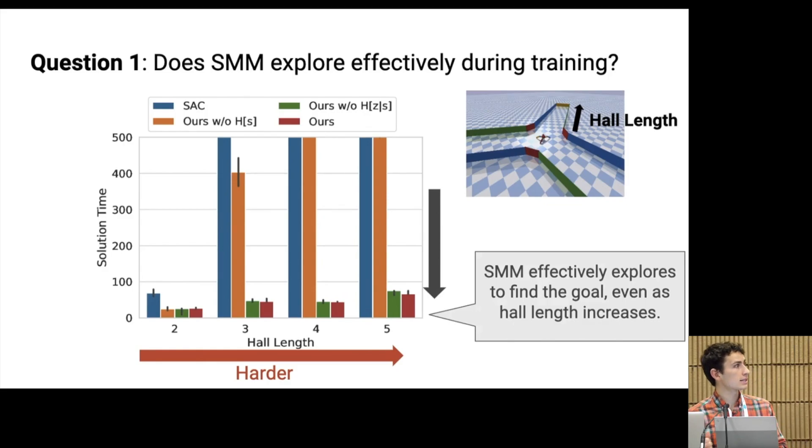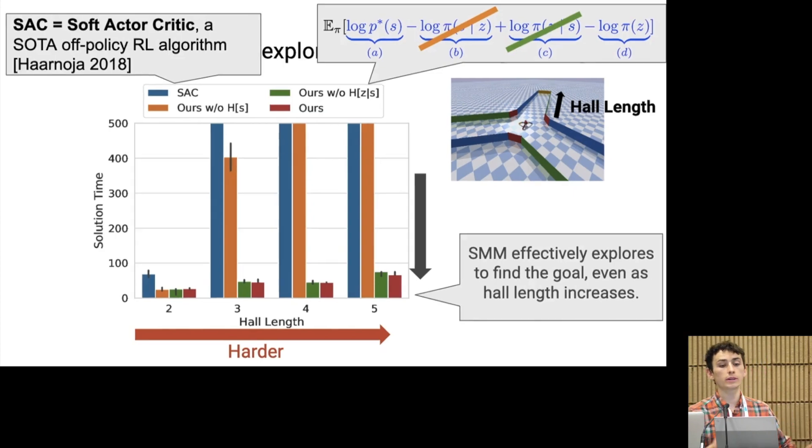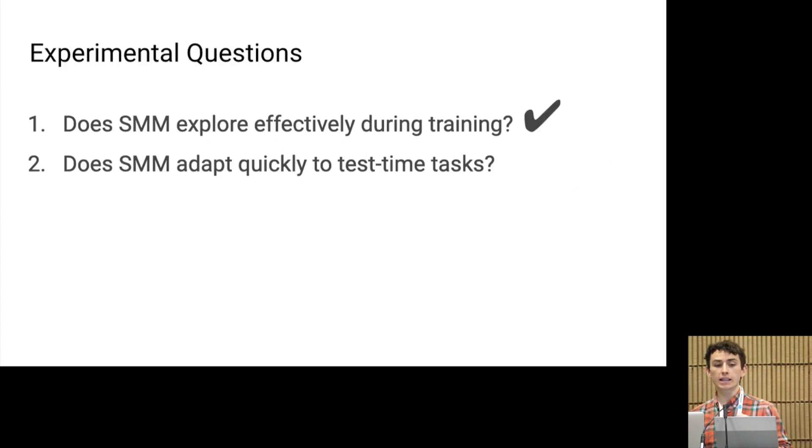In contrast, a state-of-the-art RL baseline, shown in blue, fails to solve the task as the length of the hallway increases. The other lines indicate various ablations of our method that we can talk about at the poster session. So in this first experiment, we saw how marginal matching enabled us to solve a single task more quickly. The next experiment is going to focus on the multi-task aspect of state marginal matching.